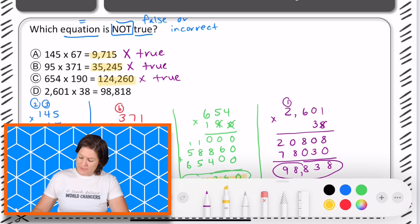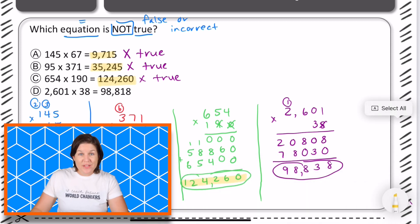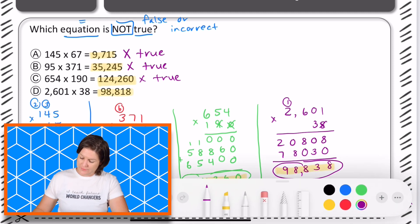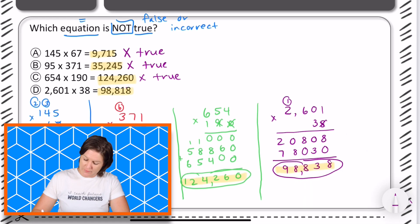And before we go ahead and mark D, let me just go through. We've got 2,601 times 38. That gives you a product of 98,838 and that is not what matches there. Right here we've got a digit 1 in the tens place and it should be a digit 3 in the tens place. So this one would be our answer.